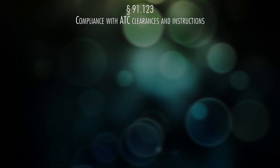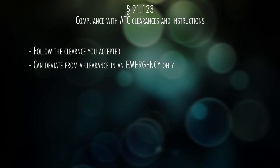91.123 talks about air traffic control clearances. If you get a clearance from air traffic control, it's a legal contract and you have to comply unless you get a different clearance. The only time you can deviate from a clearance is in an emergency. Also, you can't take somebody else's clearance.